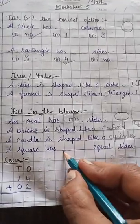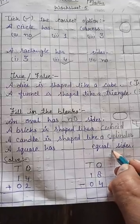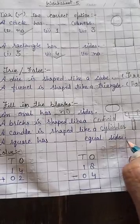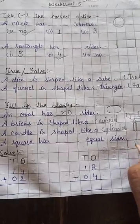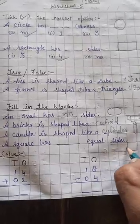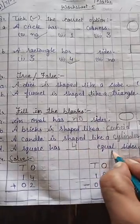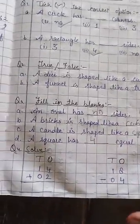A square has dash equal sides. What is the shape of the square? Yes. This is the square. How many sides are there? One, two, three, four. Then, a square has four equal sides.